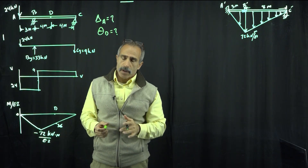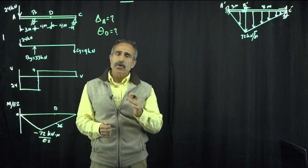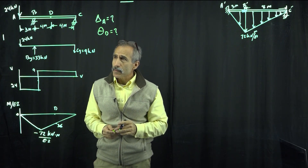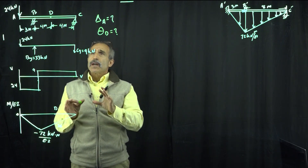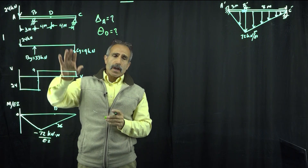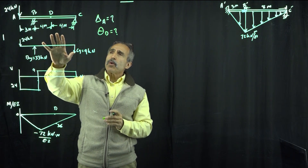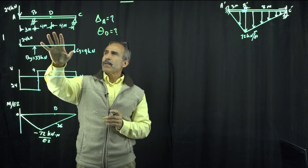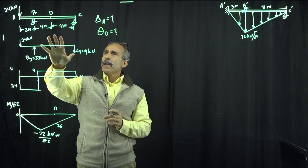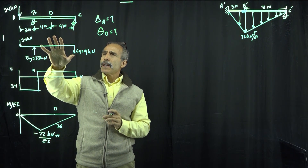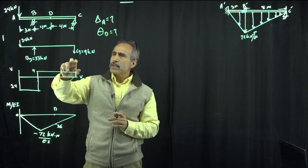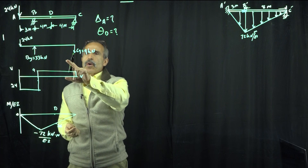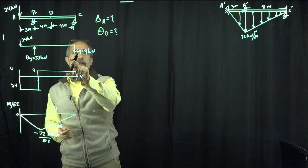The question is to use the conjugate beam method. So the first thing we're going to do is draw the moment diagram for this beam. And obviously, first thing, we're going to calculate the reactions. We know how we do this.